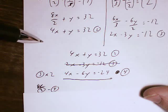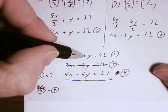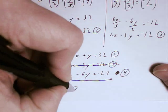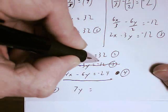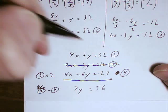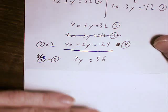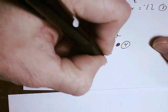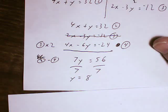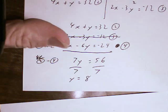4x minus 4x gives me a 0. 1y minus negative 6y gives me a 7y. And 32 minus negative 24 gives me 56. If I divide both sides by 7, I get y equals 8. That's the y coordinate of my solution.